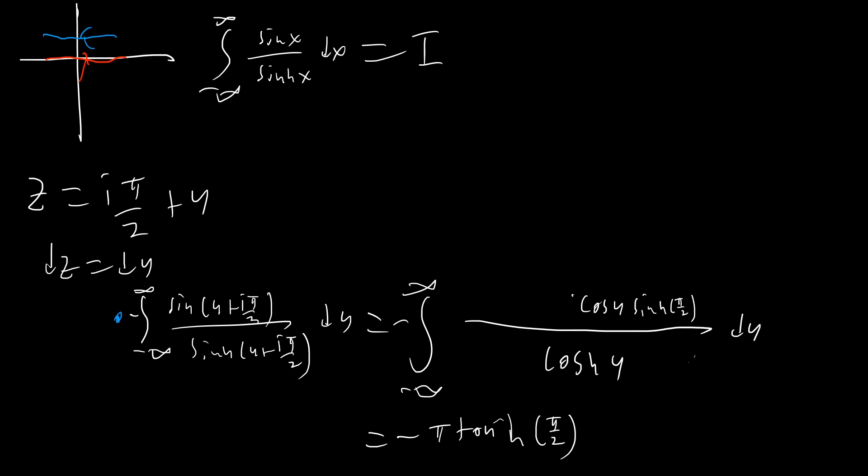All right. And so now we're ready to solve our integral. So as we said in the beginning, we have the integral of f of z dz is equal to 0. And that's just equal to I plus this other integral right here, which is negative pi tanh of pi over 2. And so just rearranging, we get that I is equal to pi tanh of pi over 2. That's our answer.